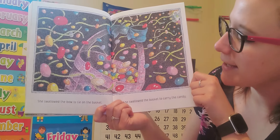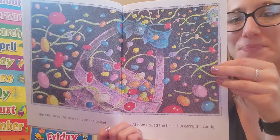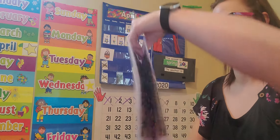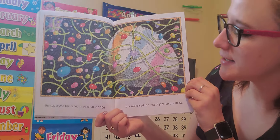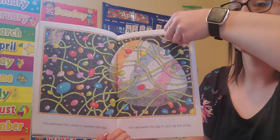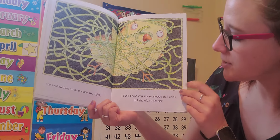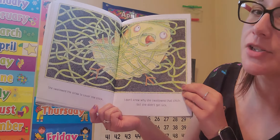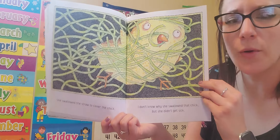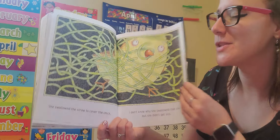She swallowed the bow to tie on the basket, she swallowed the basket to carry the candy, she swallowed the candy to sweeten the egg, she swallowed the egg to jazz up the straw, she swallowed the straw to cover the chick. I don't know why she swallowed that chick, but she didn't get sick. What do you think our old lady is making today? Any ideas? Let's find out.